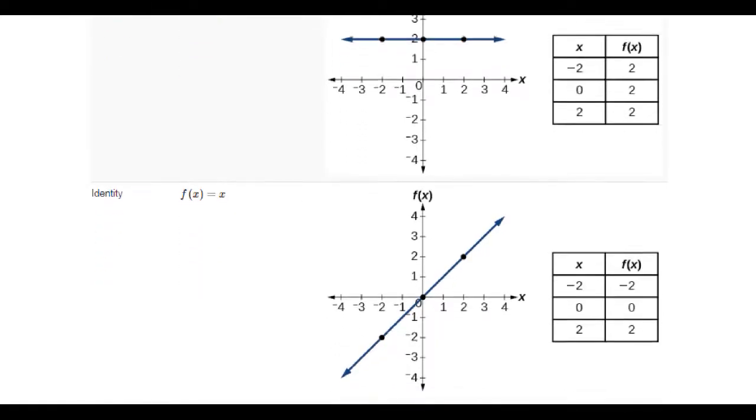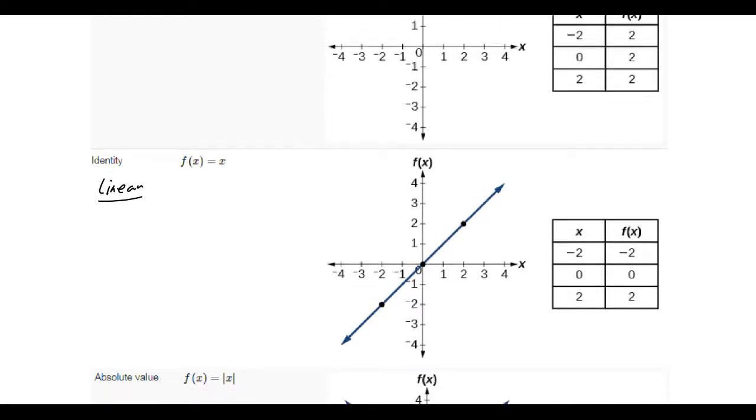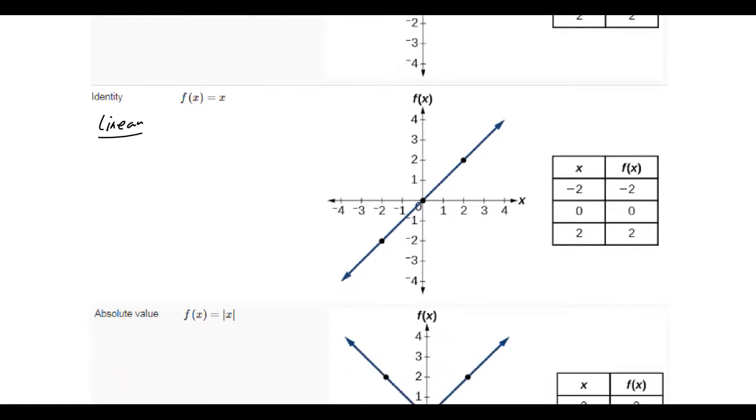The next one, the linear identity function, and that's a linear function, f of x equals x, where the input equals the output. That's why it's called the identity function. Input and the output are identical, and it is linear.